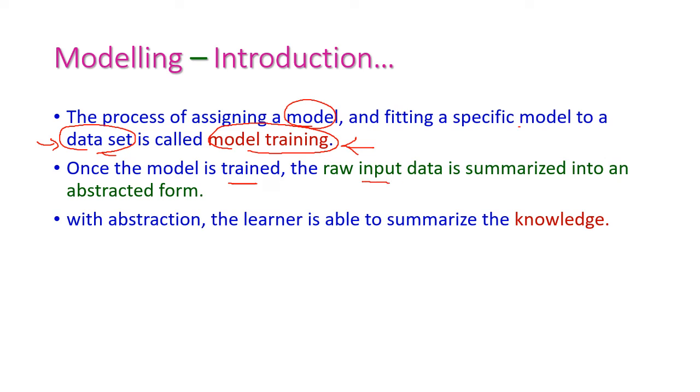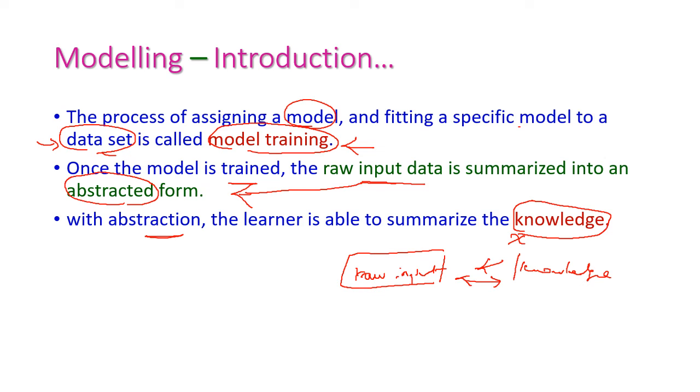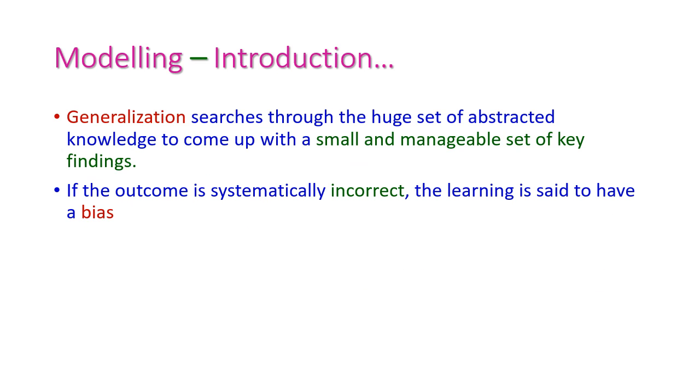The process of assigning a model and fitting to a specific model to a data set is called as model training. Model training means we have to select a suitable model and that should be suitable for the given data set. Once the model is trained, then the raw input is summarized into abstracted form. The raw input will be converted into abstracted form, this is called as model training. By using abstraction, the learner is able to summarize the knowledge. From the raw input, we will get the knowledge. Our goal is from the raw input, we have to get the required knowledge, that may be in the form of abstraction or visualization or whatever it may be.